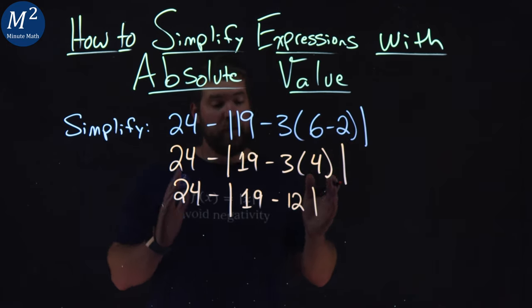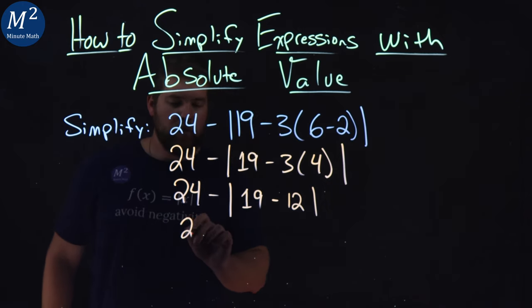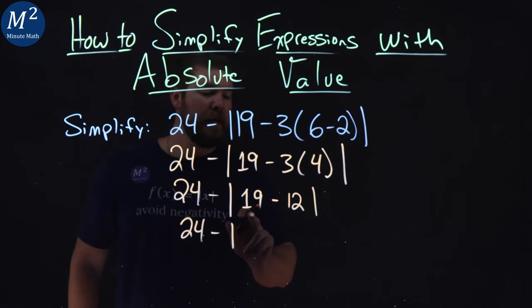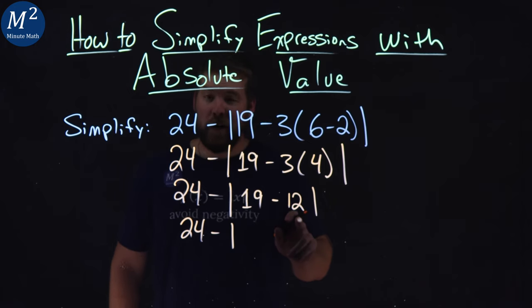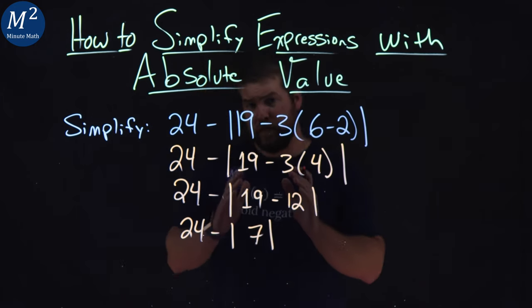Again, absolute value is treated like parentheses, so we have to deal with what's on the inside of the absolute value first. So we have 24 here minus the absolute value of 19 minus 12, which is 7. So we have the absolute value of 7 here.